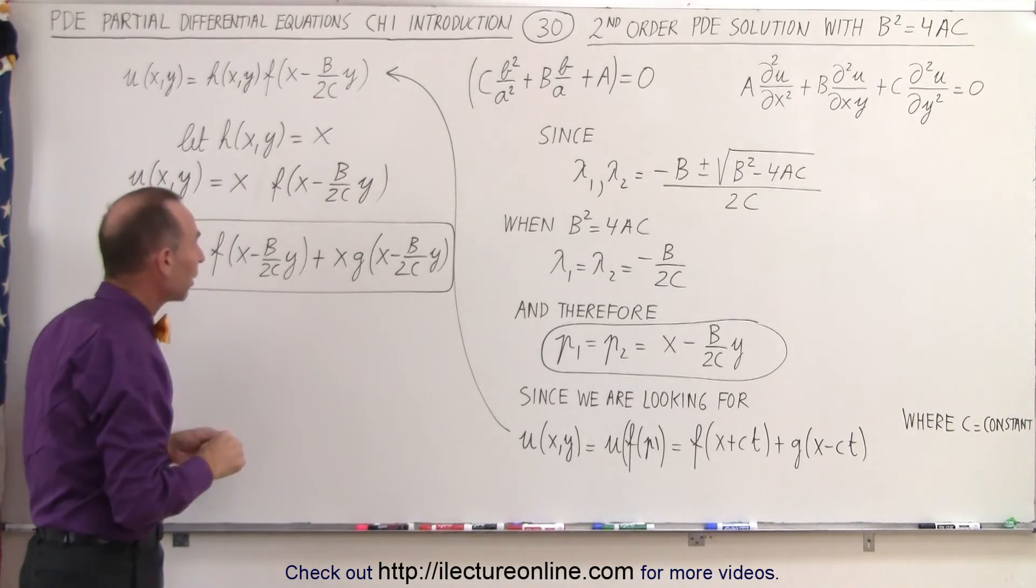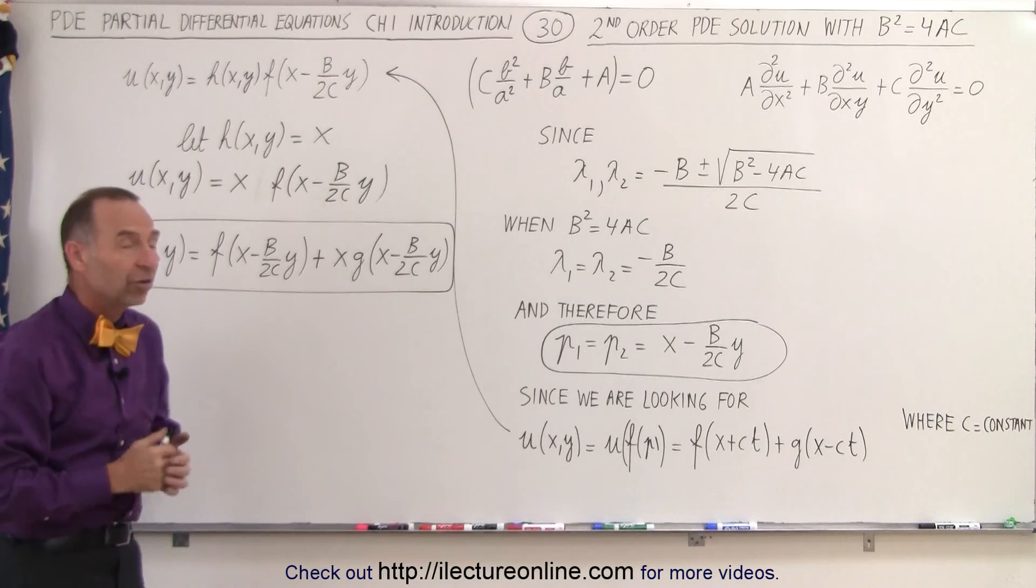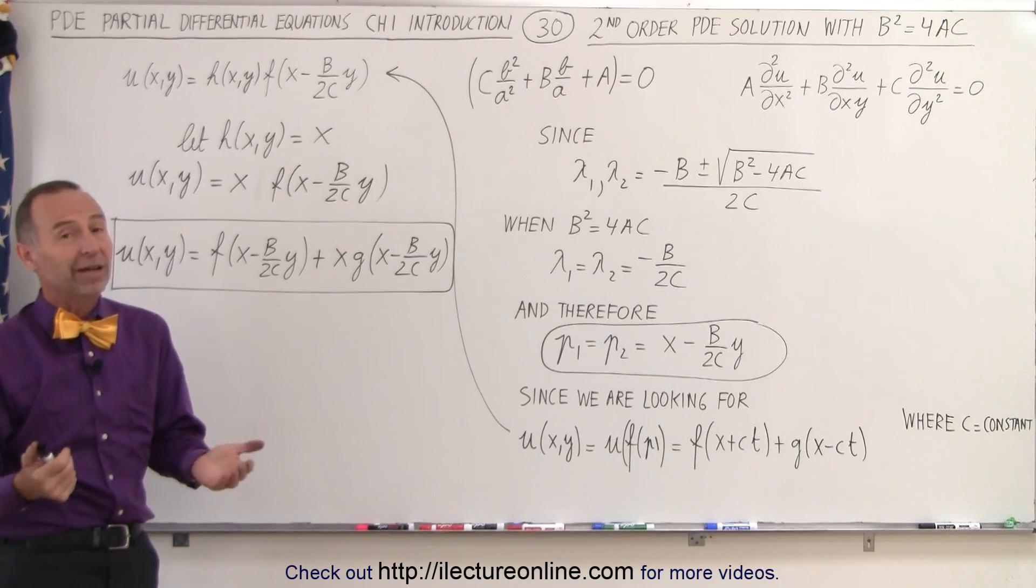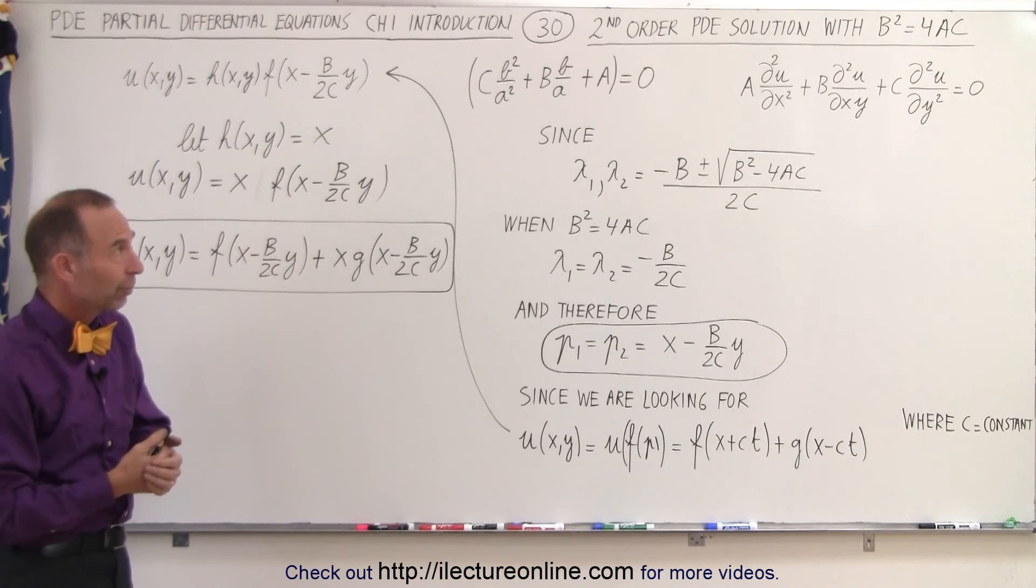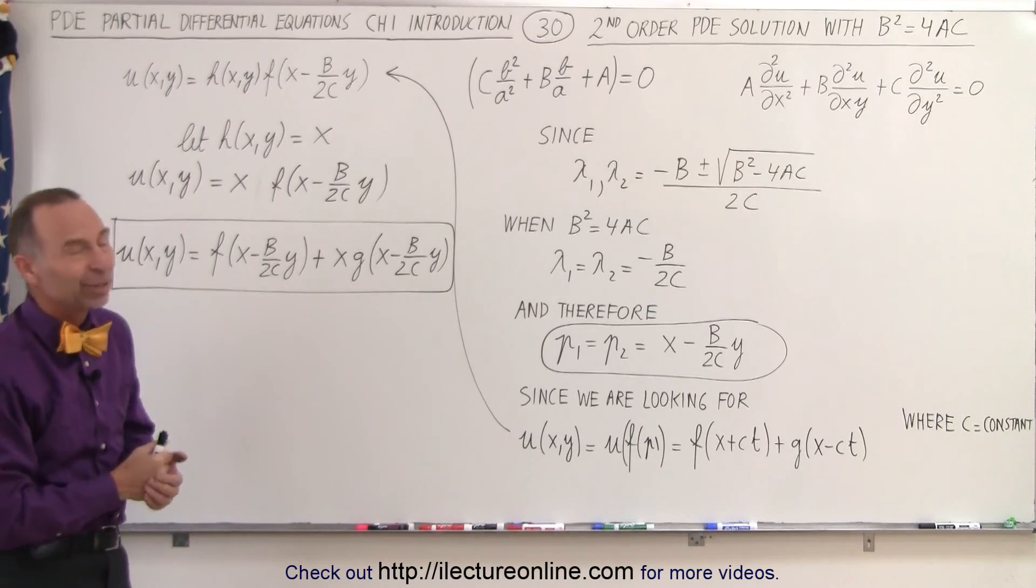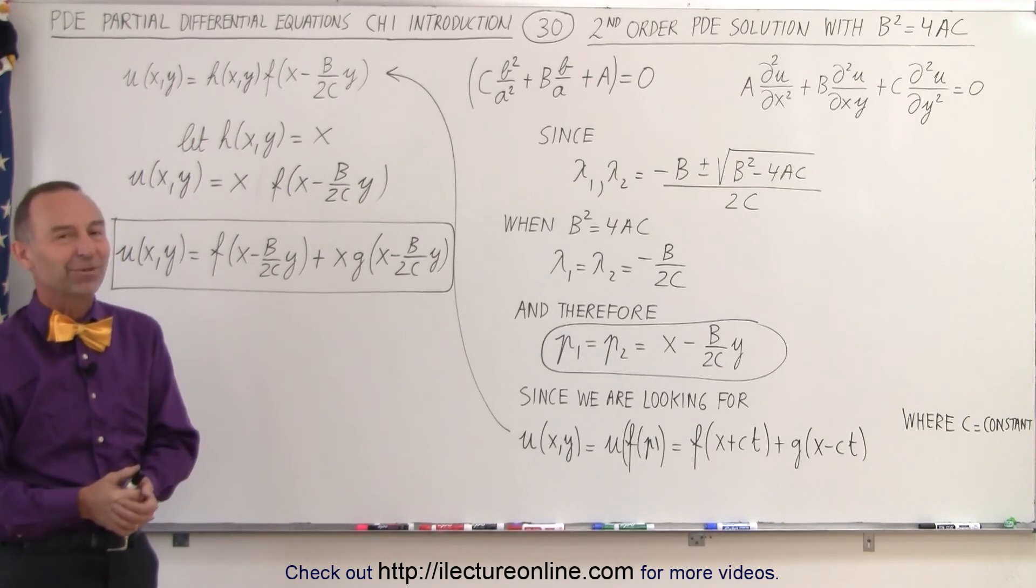And that would be then the general solution of that simplest form. And that is how we go ahead and find the solution to a second order partial differential equation when b² equals 4ac. That's how it's done.